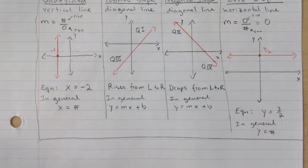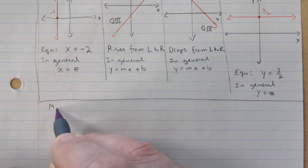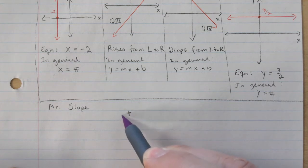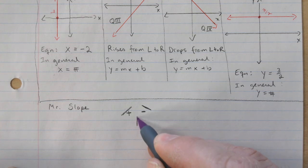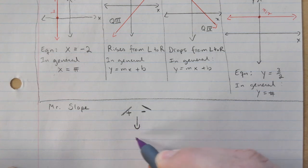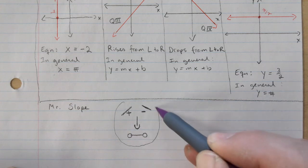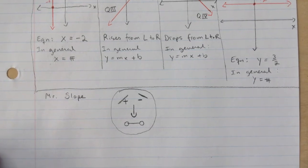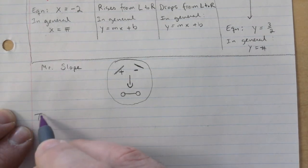Here's a little aside to help you out — you can take it or leave it. Think of 'Mr. Slope': a positive line always goes up like this, a negative always goes down like this, a vertical line has an undefined slope, and a horizontal has a zero slope. Art and math do meet — looks like a clown almost. Anyway, we'll continue with our notes.